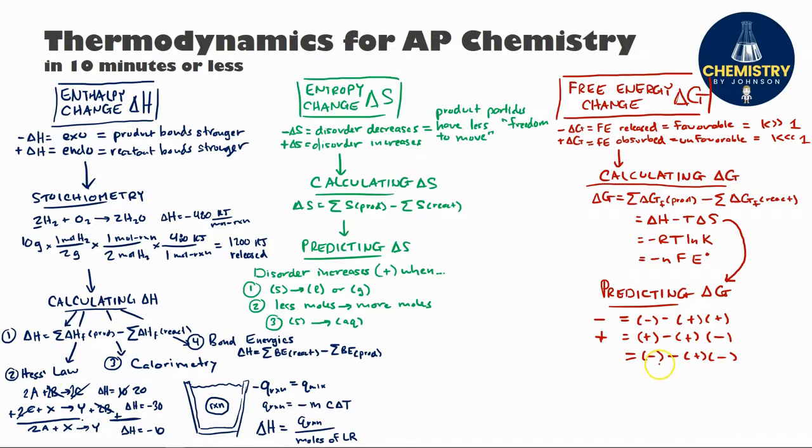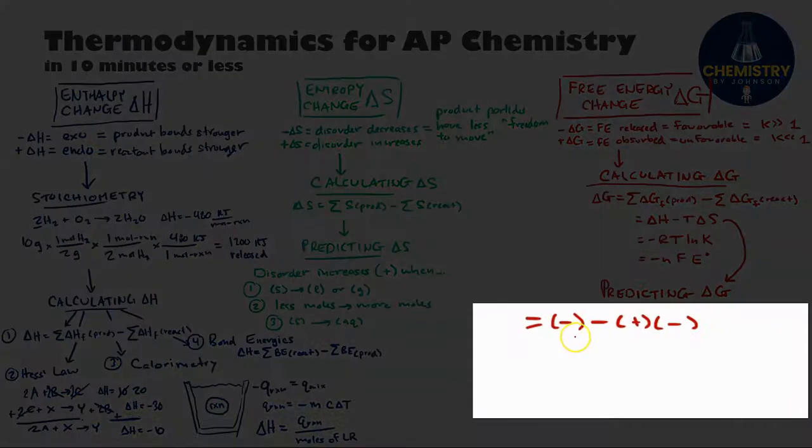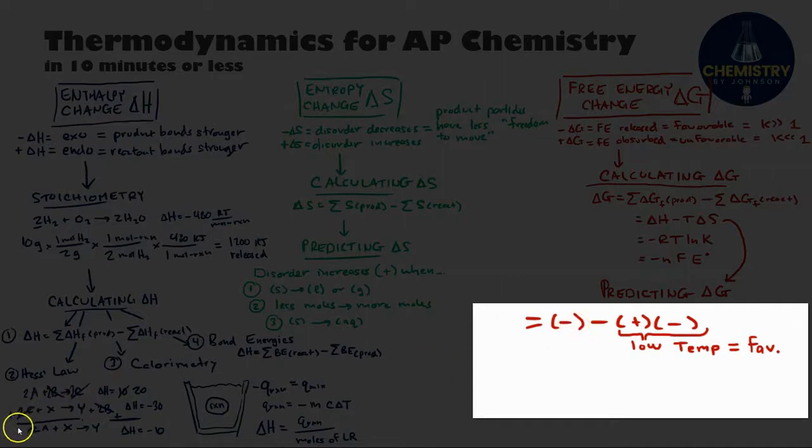If both delta H and delta S are negative, then you can't say for sure the sign of delta G that you're going to get. What I can say though is that in that type of reaction, I want to keep my temperature low to keep this T delta S term small so that it doesn't overcome this negative delta H. In this type of scenario, low temperatures will generally lead to thermodynamic favorability.